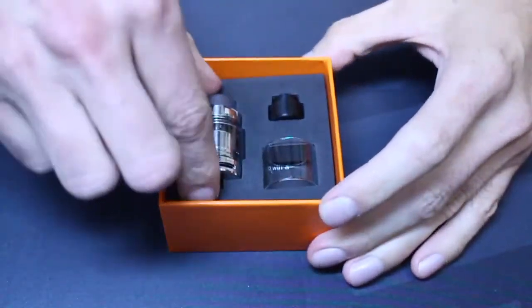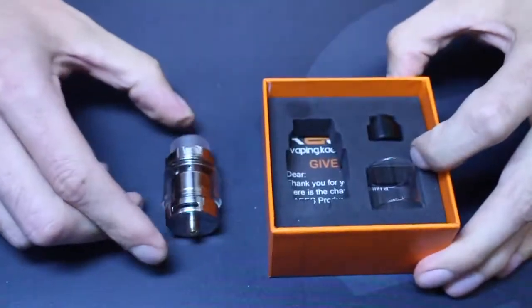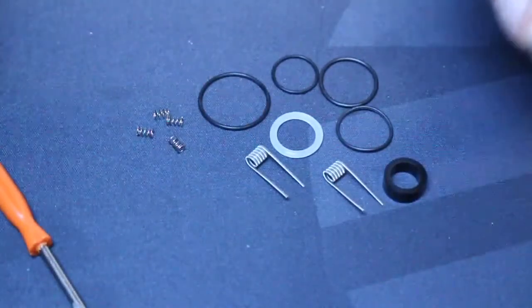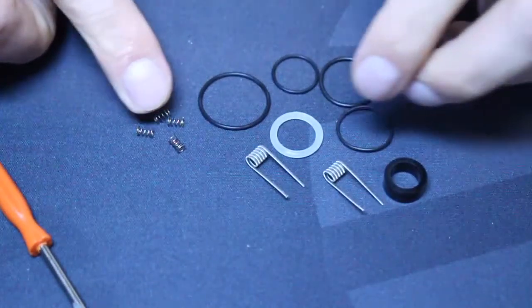In the box you get the Stacked RTA, a spare straight 3ml glass tube, an 810 drip tip, two Clapton coils, a 510 drip tip adapter, a screwdriver, spare parts, and a user manual.